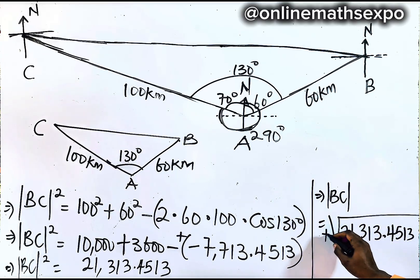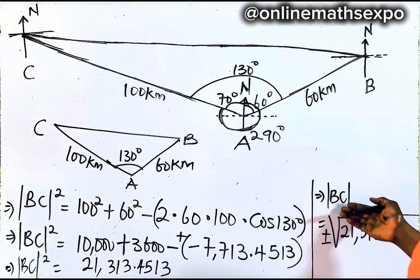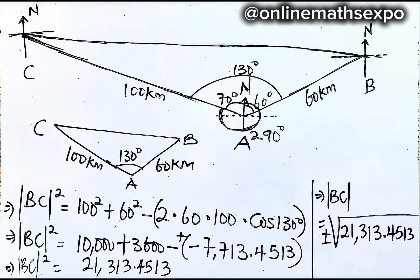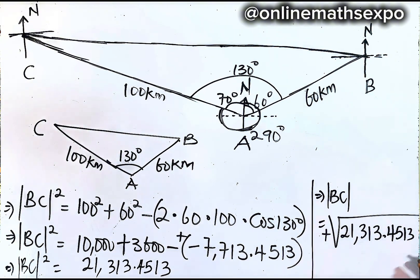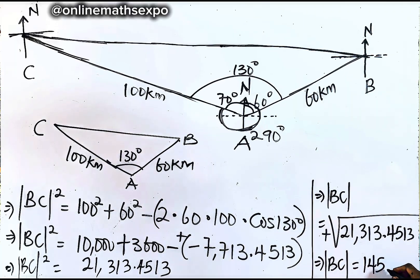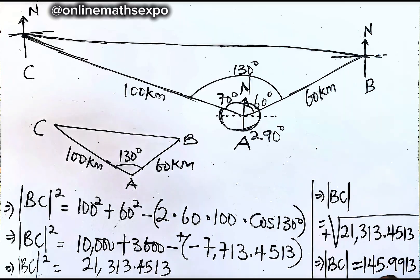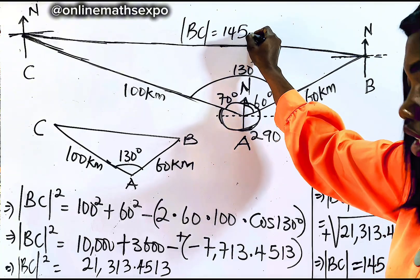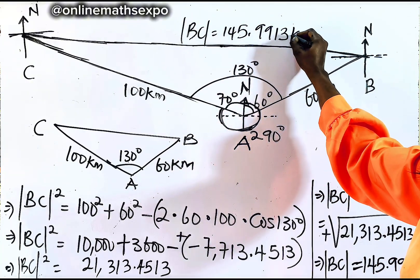When finding the square root, you take positive and negative, but since we are working with sides, we concentrate only on the positive square root because a side cannot be negative. So BC = 145.9913 kilometers.